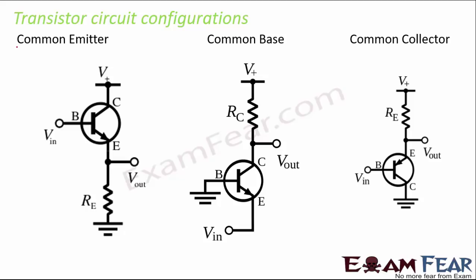There are three transistor circuit configurations: common emitter, common base, and common collector. In common emitter, the emitter is grounded and is the common junction between base and collector. In common base, the base is grounded and is common between collector and emitter. In common collector, the collector is grounded and is common between base and emitter. You must know the characteristics of each configuration.